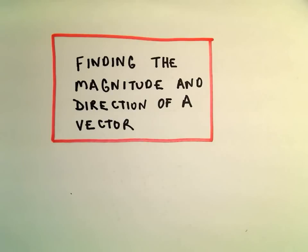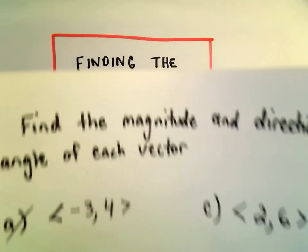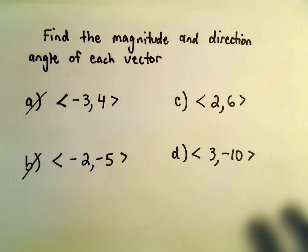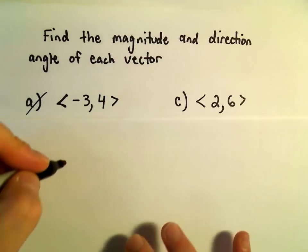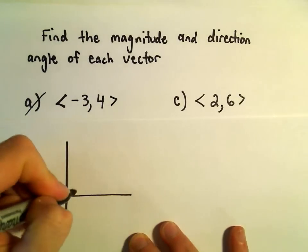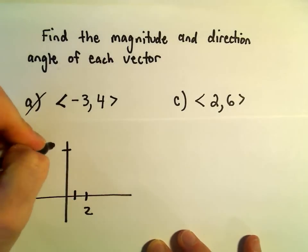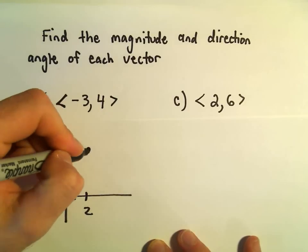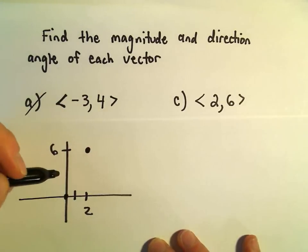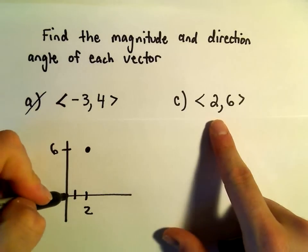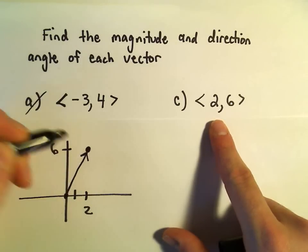Okay, so just a couple more examples finding the magnitude and direction of a vector. Maybe we can squeeze these both in here. So let's find the magnitude and direction angle of the vector with components 2, 6. So again, all that means if we imagine situating it at the origin, you've moved 2 units to the right and 6 units up.